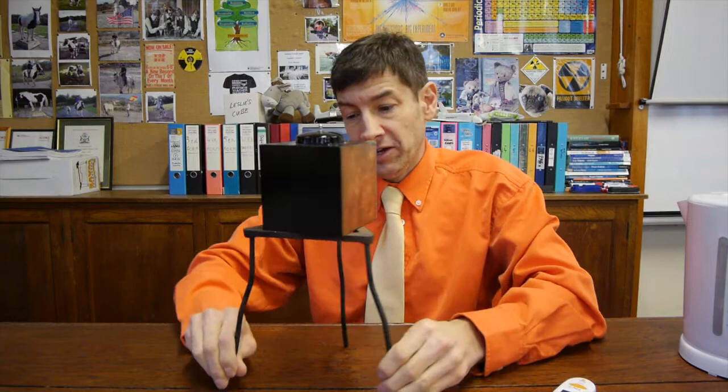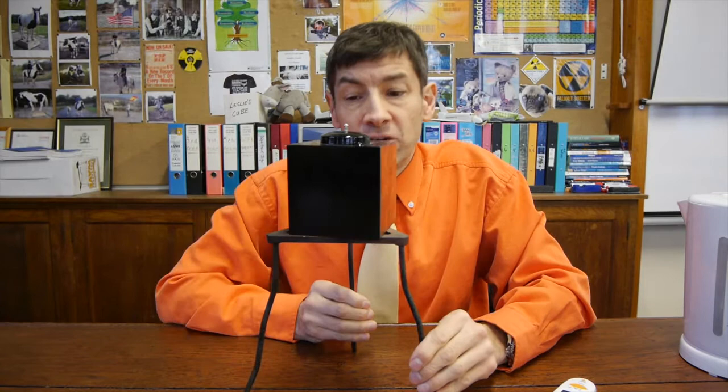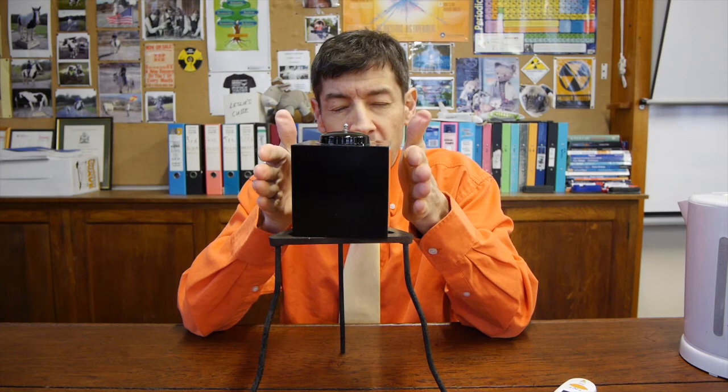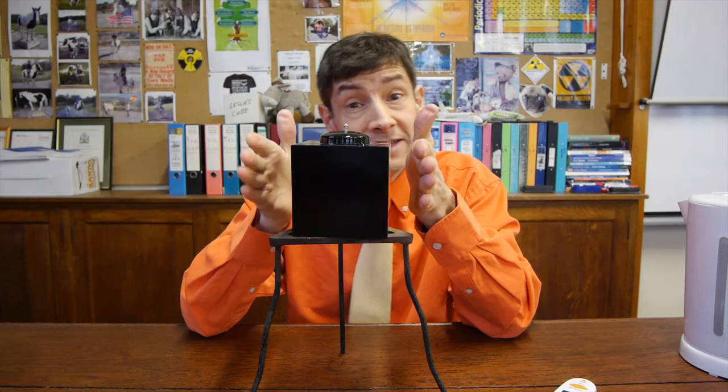And as long as it's safe for students to do it, get them to put their hands at a fixed distance. And they can even close their eyes. And this side for a fixed distance is much hotter. I feel much more heat coming off it. So I know immediately that's the dark side, the black side of the cube.